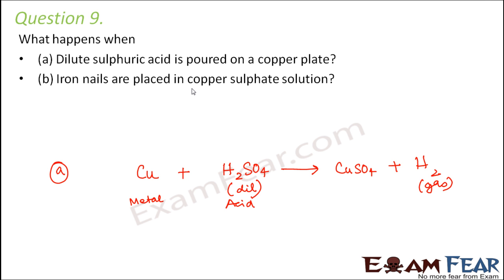Part B: Iron nails are placed in copper sulphate solution. In that case, iron has to react with copper sulphate. This copper sulphate, which is blue in color, is an aqueous solution.